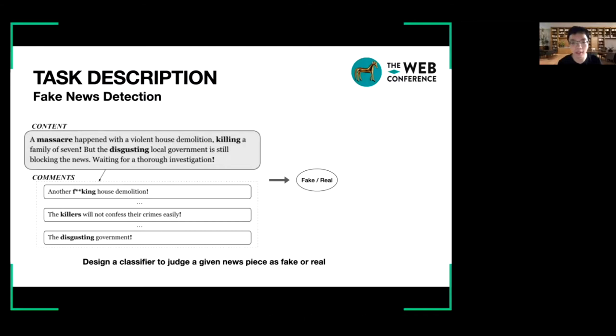When detecting fake news, researchers can leverage anything about the news piece. Usually, we can utilize signals from the content of news, the comments of the readers, the attached images, and other social contexts, such as the publishing platform, the publisher, the crowd, and the propagation structure of the news. In our paper, we focus on text-based fake news detection, which mainly considers the news content and the crowd comments.